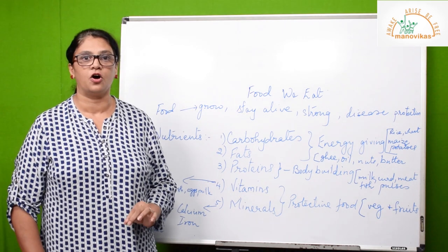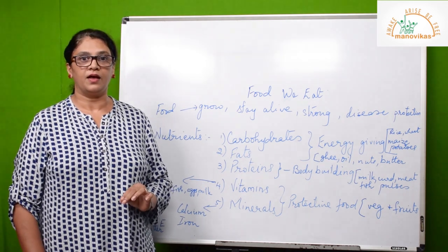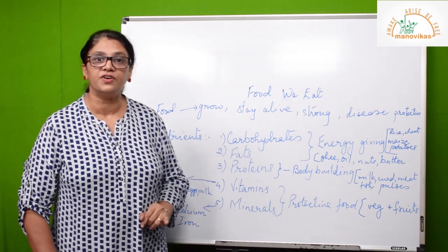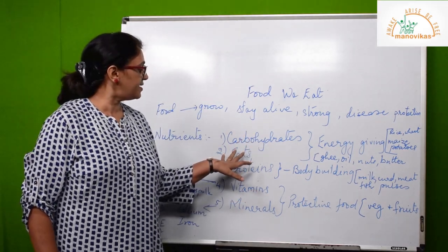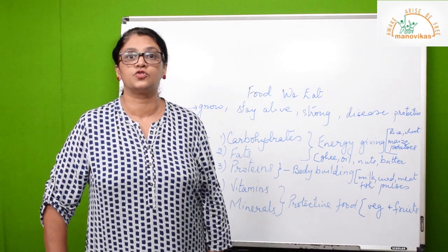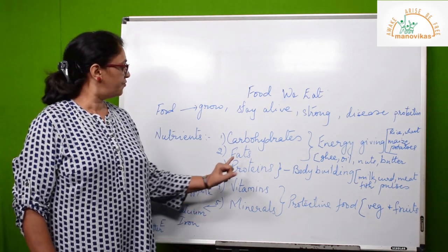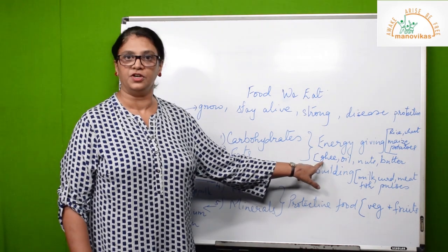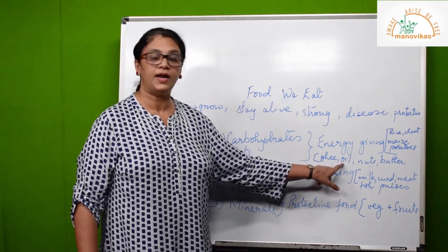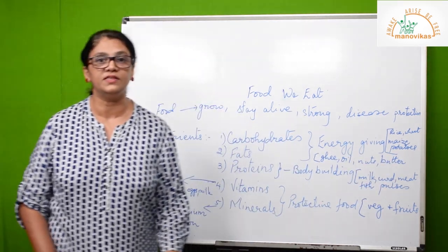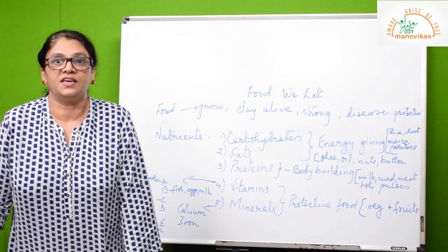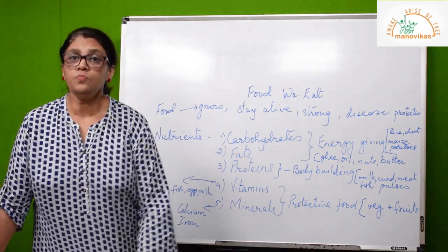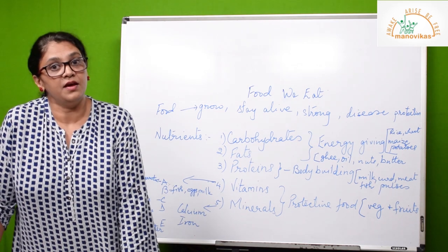These are some examples of energy-giving food. Along with carbohydrates, fats also give us energy, but the energy given by fats is stored for later use. Foods containing fats include ghee, oil, nuts, and butter — all these items give us the nutrient fats.